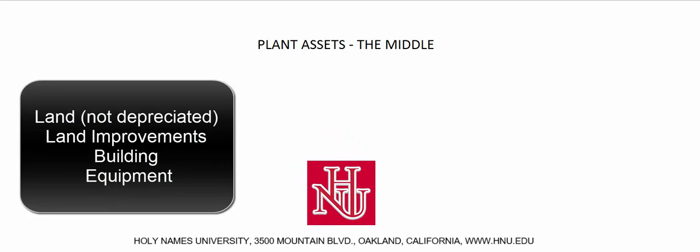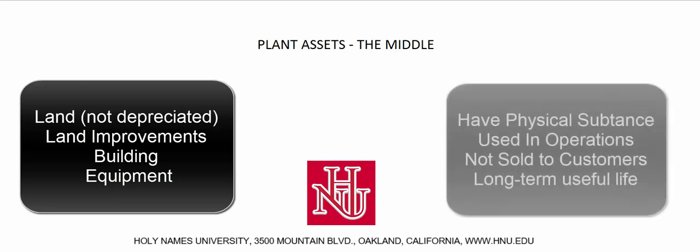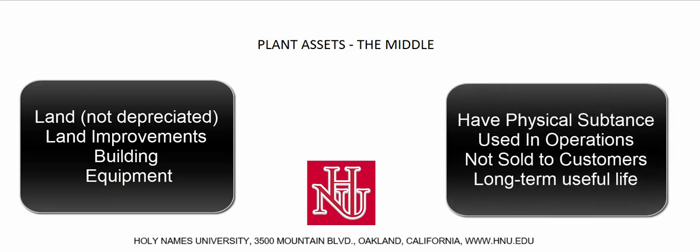Let's continue talking about plant assets. Plant assets are land, land improvements, building, and equipment. They have physical substance. We use them in the operation of our business. We don't plan on selling them to anybody, and we expect them to be around for a number of years.